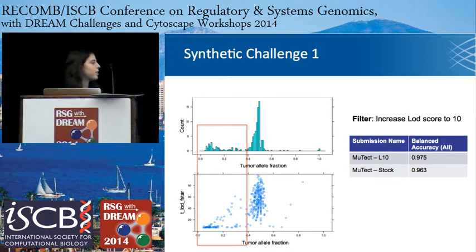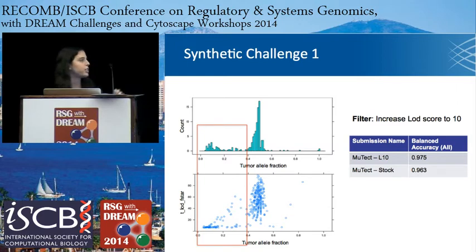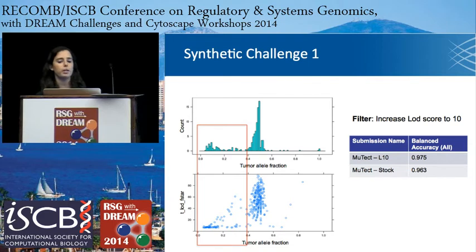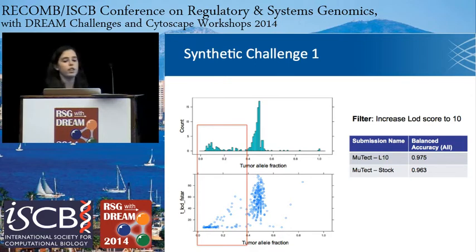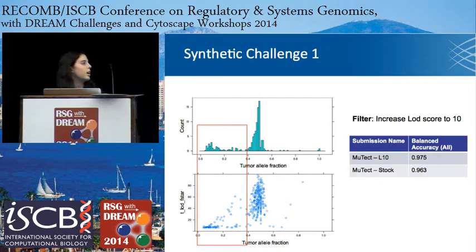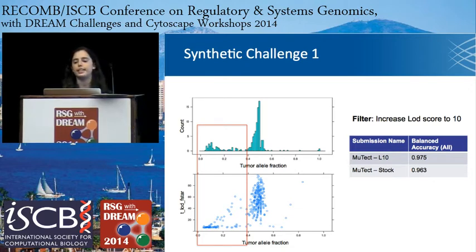We took out some of those sites and looked at them in IGV to see if they looked real. For example, one shown here is a false positive event because it has very low quality bases — many Cs that are slightly lighter in color suggesting low base quality — and you also see some support in the normal as well. Based on these observations, we increased the LOD score to 10 from the previous 6.3, and that increased our balanced accuracy from 0.96 to 0.975, winning that challenge.